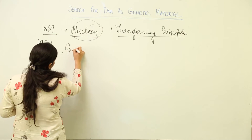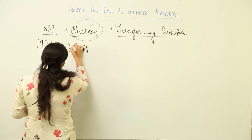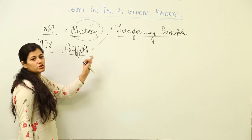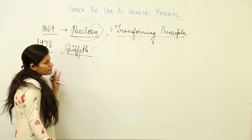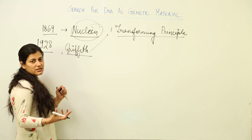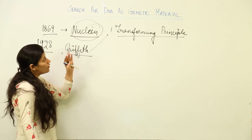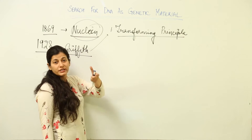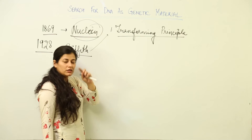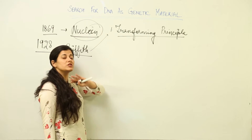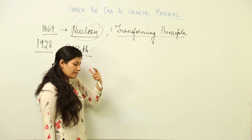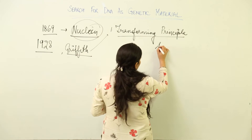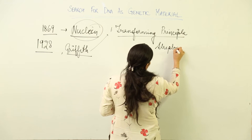Griffith was a scientist whose transforming principle experiment is an important experiment that talked about transformation. What was observed is that the physical characteristics of a bacterium changed due to genetic material. It was observed that DNA could change the physical characteristics of the given bacteria used in the experiment, and whatever molecule was responsible was named the 'transforming principle.' This was carried out using bacterial colonies of Streptococcus pneumoniae.